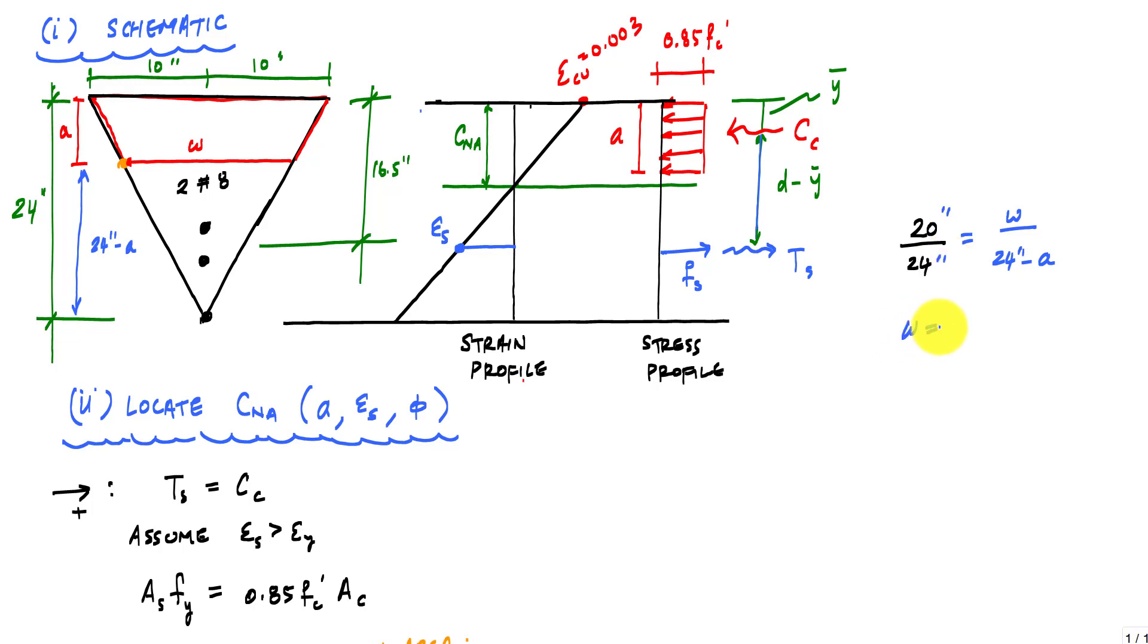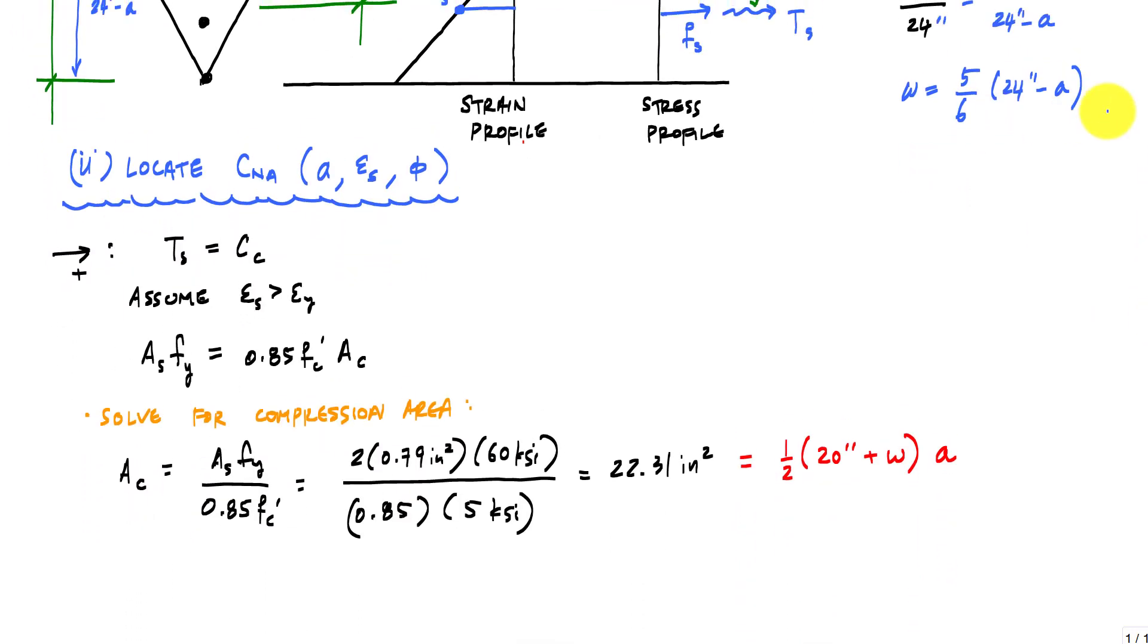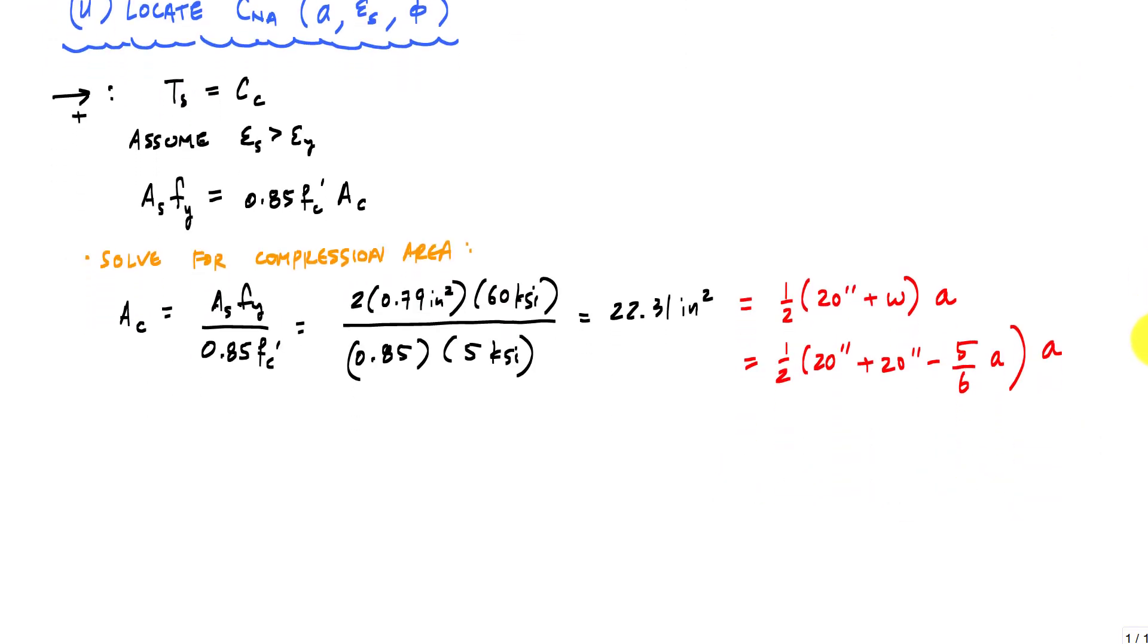By similar triangles, we can figure out a relationship between W and A. And this W is equal to 5/6 times 24 inches minus A. And that's it. It's just more geometry. So geometry, nothing complicated, just additional geometry. And if I substitute that definition of W into this relationship here, and this, if I go ahead and do a little bit more algebra, this will be equal to the 22.31 inches squared. And then I all I'm going to do is solve for A.